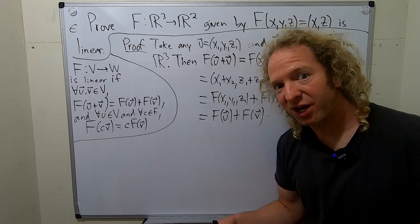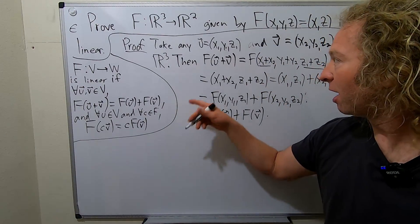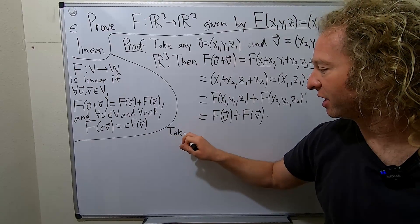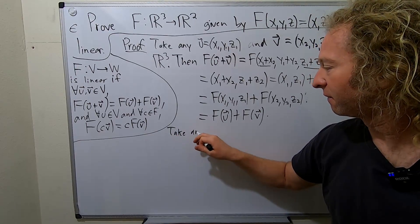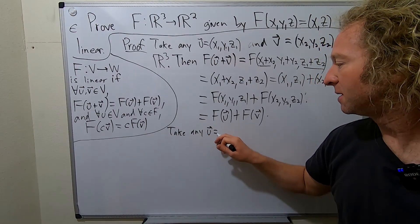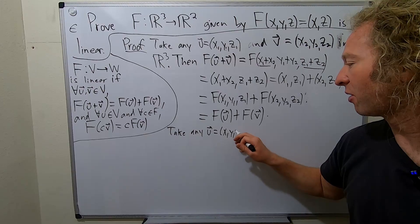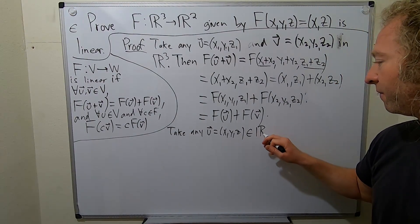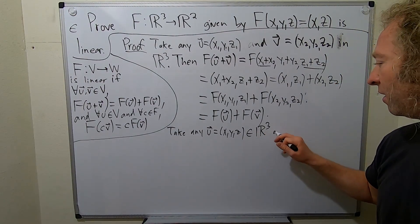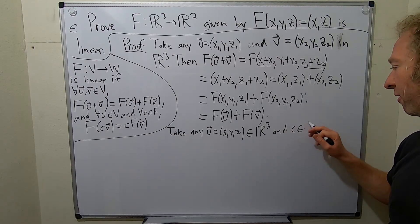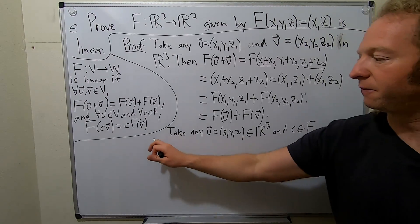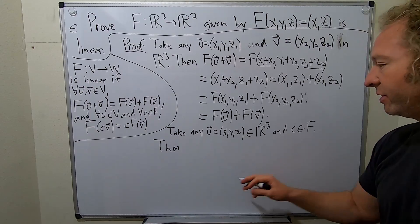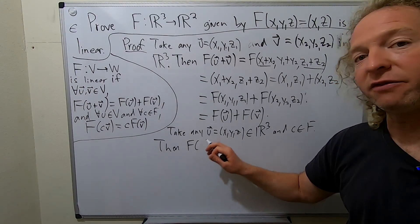Now we just have to check the second condition. So take any u — this time I'm just going to call it (x, y, z) — in R³, and c in our field F. Then we have to look at f of cu.